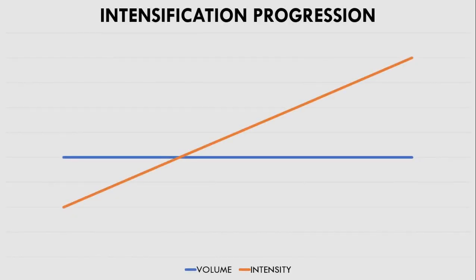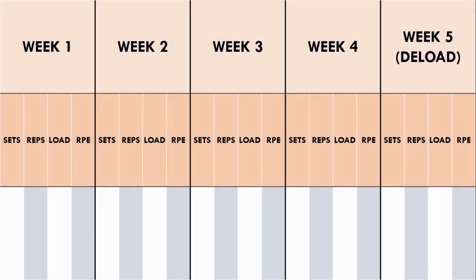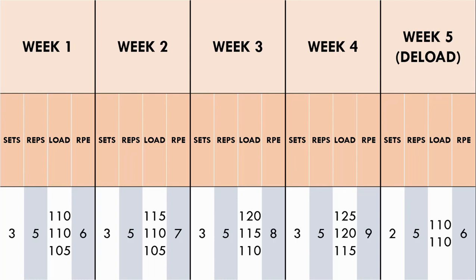The second method of using RPE in programming for strength training is during an intensification phase. During this phase, the goal is to increase load lifted while maintaining a moderate level of volume. The number of sets and reps are predetermined, while the load is auto-regulated via RPE. For example, we perform 3 sets of 5 each week and increase the load week to week, prescribing increasing RPE: RPE 6 in week one, 7 in week two, 8 in week three, and 9 in the final week before a deload. Since reps and sets remain the same, the athlete naturally uses heavier loads each week, allowing intensity to increase while volume stays the same.